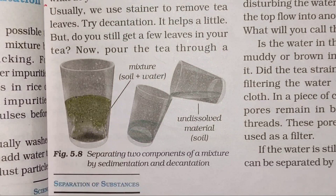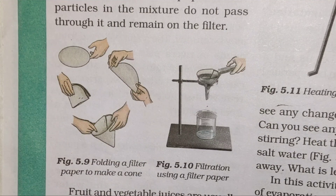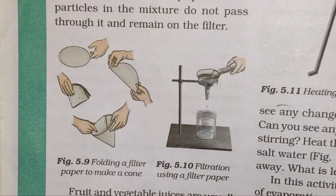Figure number 5.8 covers separating two components of a mixture by sedimentation and decantation. Another diagram from this chapter is on the very next page, page number 40 — Figure numbers 5.9 and 5.10: folding a filter paper to make a cone, and filtration using a filter paper.